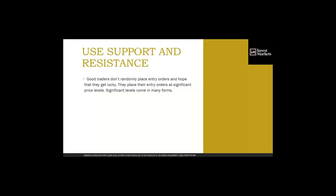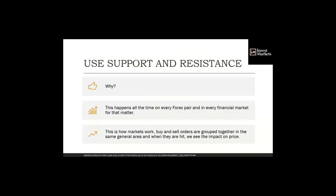Good traders don't randomly place entry orders and hope to get lucky — they place entry orders at significant price levels, which come in many forms. We use support and resistance to help figure out entry and exit points and to understand expected asset behavior. This is how the market works: buy and sell orders are grouped together in the same general area, and when they are hit, we see the impact on price.